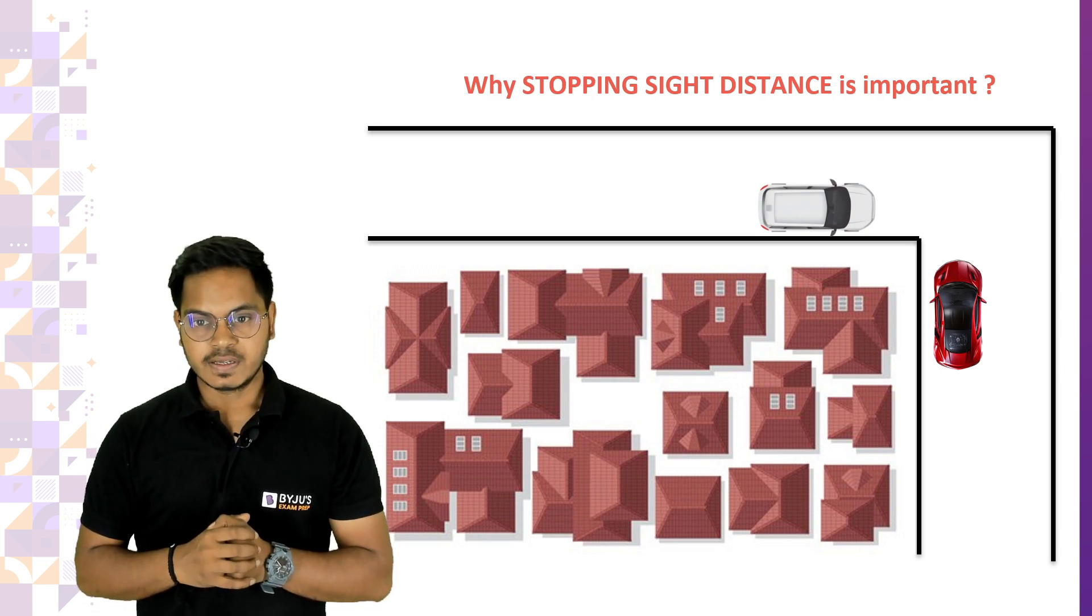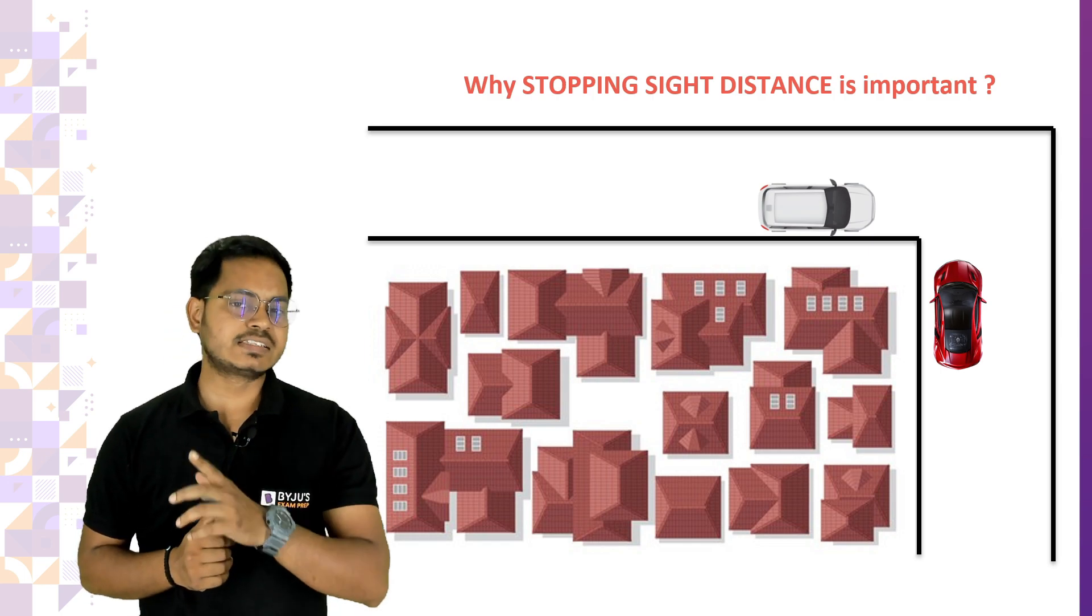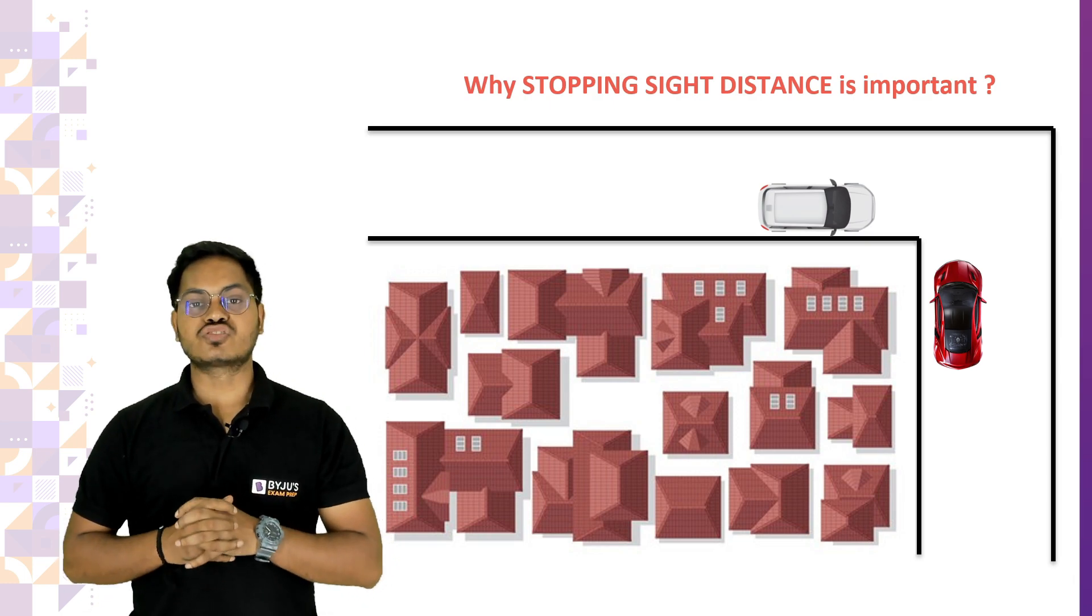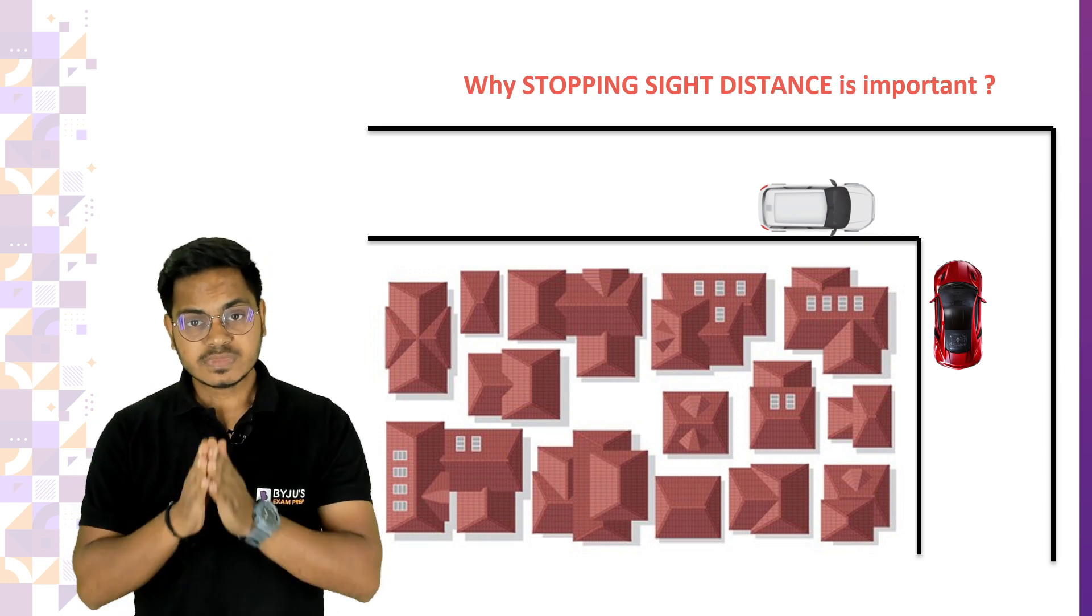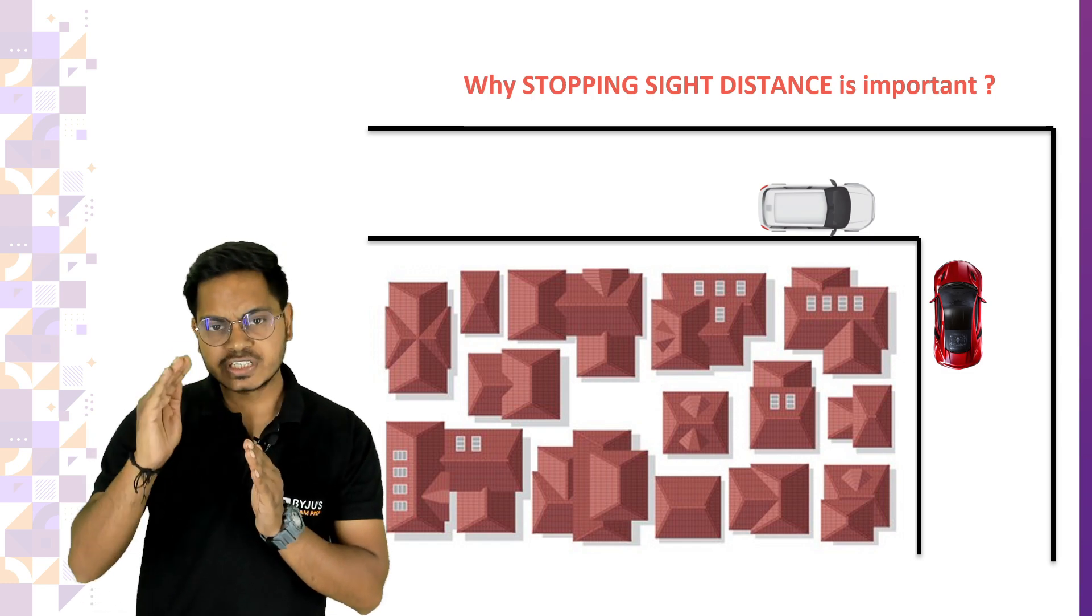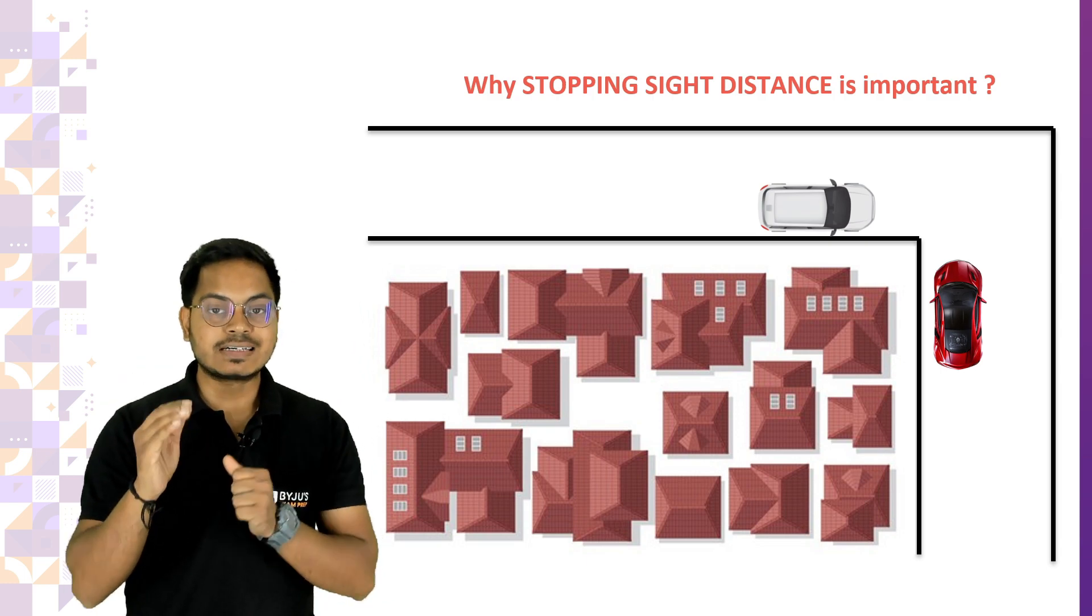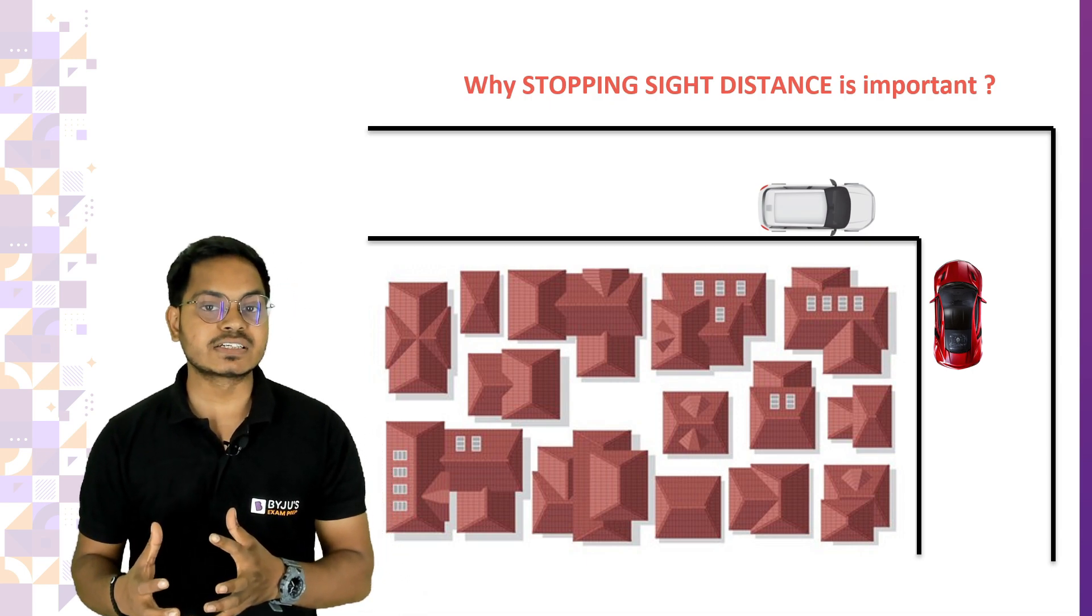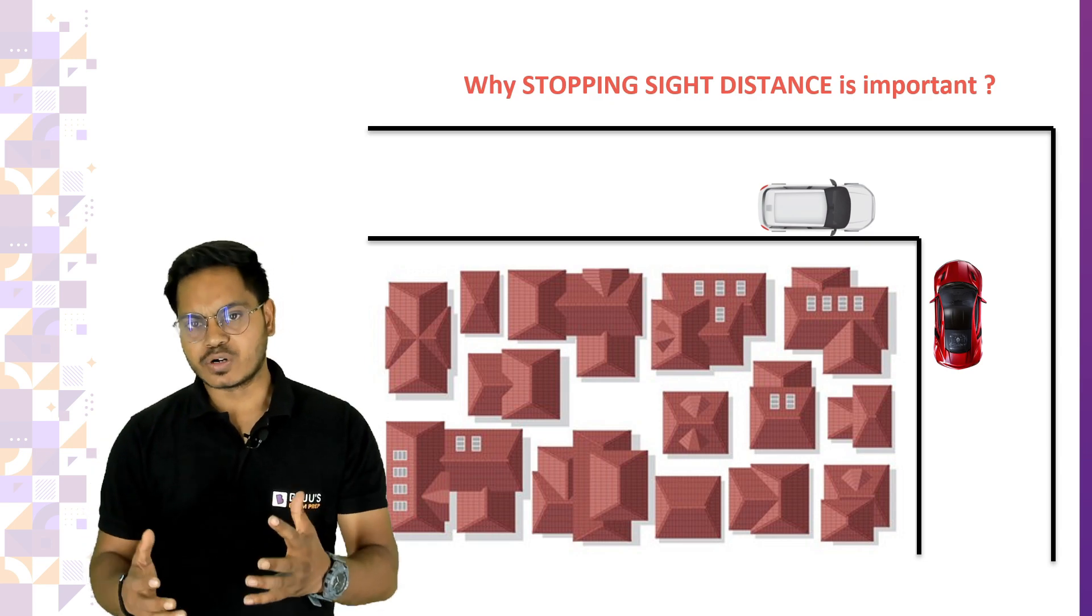The problem here is right now the distance between these two cars is way less than 50 meters and there is nothing which can stop the collision. That is the reason why we should have a sufficient distance vision for the driver so that the driver can see the object and then accordingly apply the brake to avoid any kind of collision.